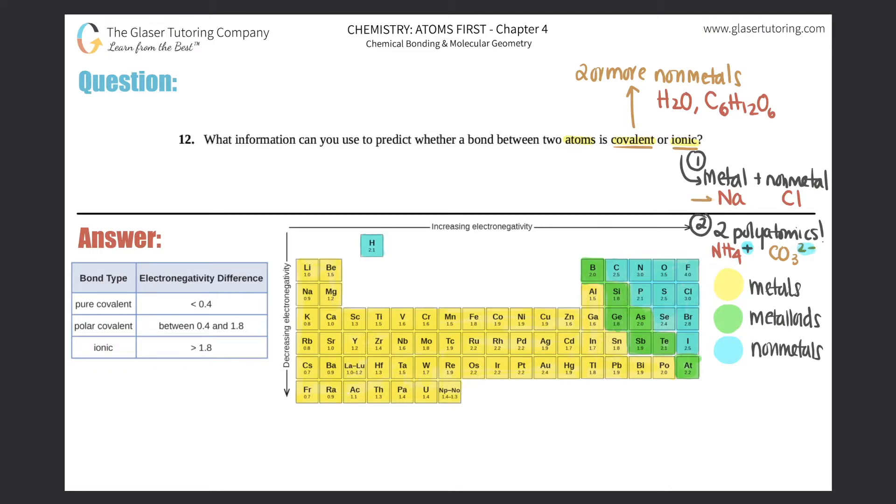And ionic bonds always have a distinct positive and a distinct negative with them. So when going back to this example, when sodium and chlorine come together, sodium has a distinct positive plus one and chlorine has that negative one. But when non-metals come together to form a covalent molecule, they don't have those direct charges.